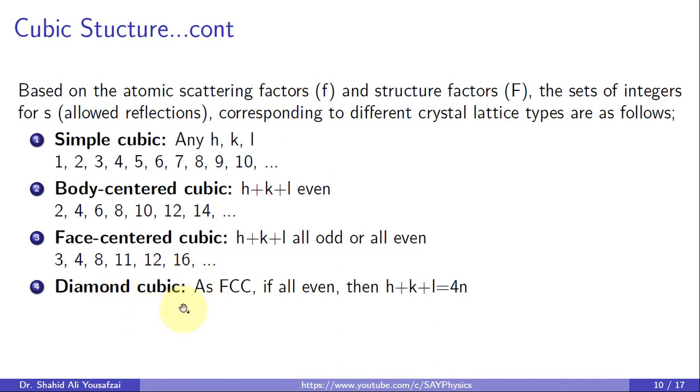The diamond cubic is an extension of the FCC, which has possible reflections when all the indices are even. In addition, h + k + l is a multiple of 4, i.e., 3, 8, 11, 16, and so on.